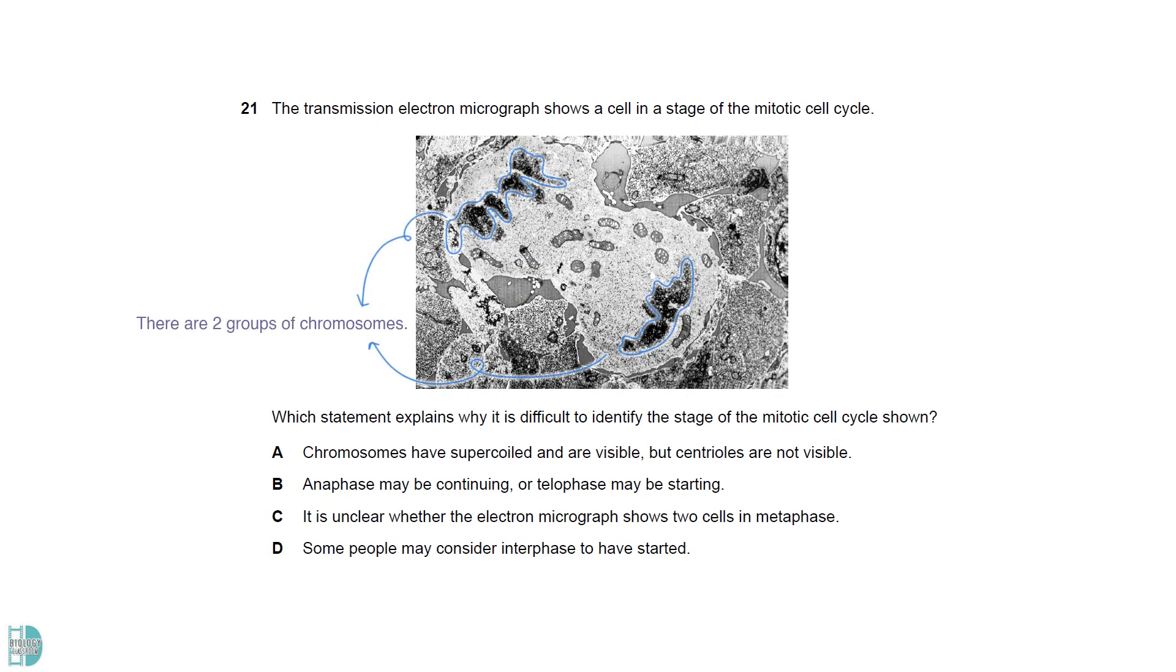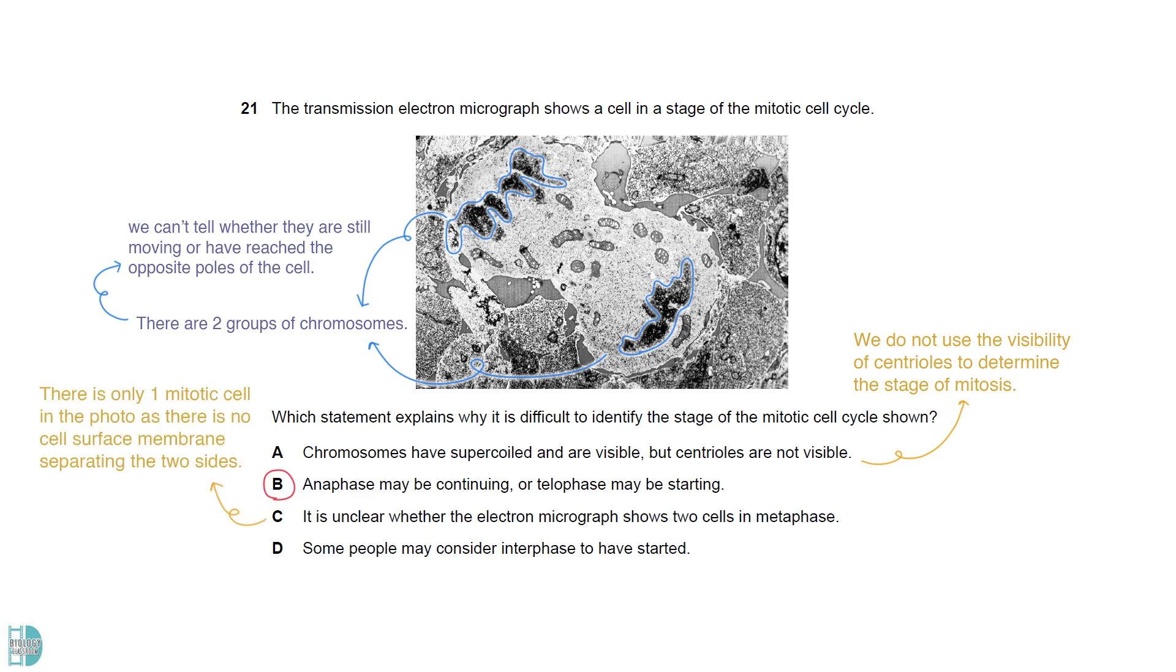In the photomicrograph, we can see two groups of chromosomes. However, we can't tell whether they are still moving or have reached the opposite poles of the cell. So, B is the answer. A is not the answer as we do not use the visibility of centrioles to determine the stage of mitosis. C is wrong because it is clear that there is only one mitotic cell in the photo as there is no cell surface membrane separating the two sides. D is incorrect because if interphase has started, we should see the nuclear envelope.